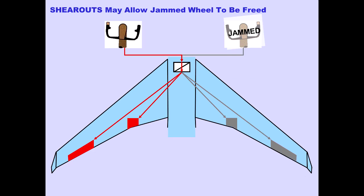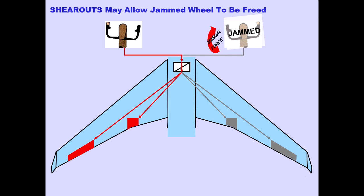Each side of the mechanical system also incorporates shear outs, which may allow the jammed control wheel to be freed when a significant manual force is applied to the jammed wheel.